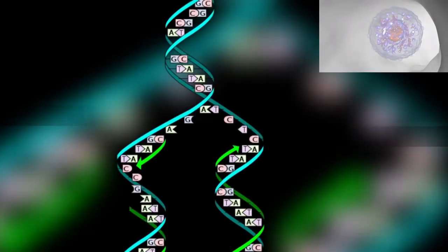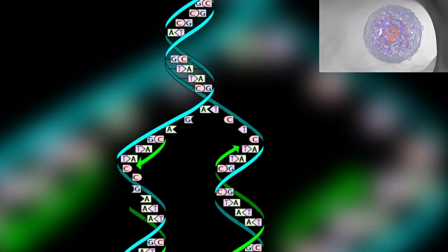Cells have emerged on our planet some 3.5 billion years ago. All living organisms are composed of one or more cells. All cells are created by mitosis and cytokinesis, processes which divide and split a single cell into two identical daughter cells.